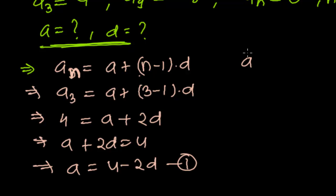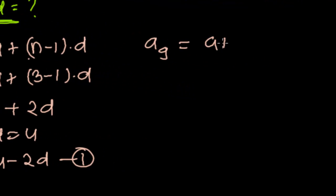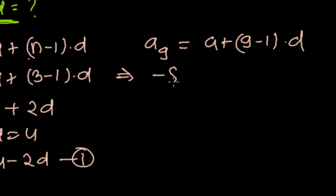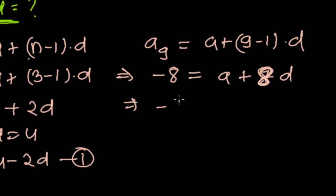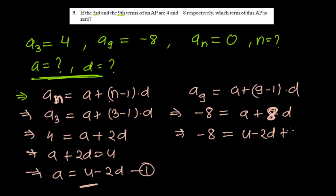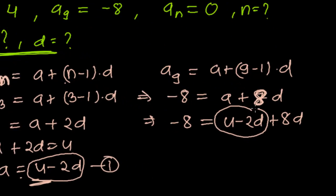And A9 equals A plus 9 minus 1 times D, which is A plus 8D. A9 is given as negative 8. Substituting A equals 4 minus 2D, we get: negative 8 equals 4 minus 2D plus 8D, which gives negative 8 equals 4 plus 6D.